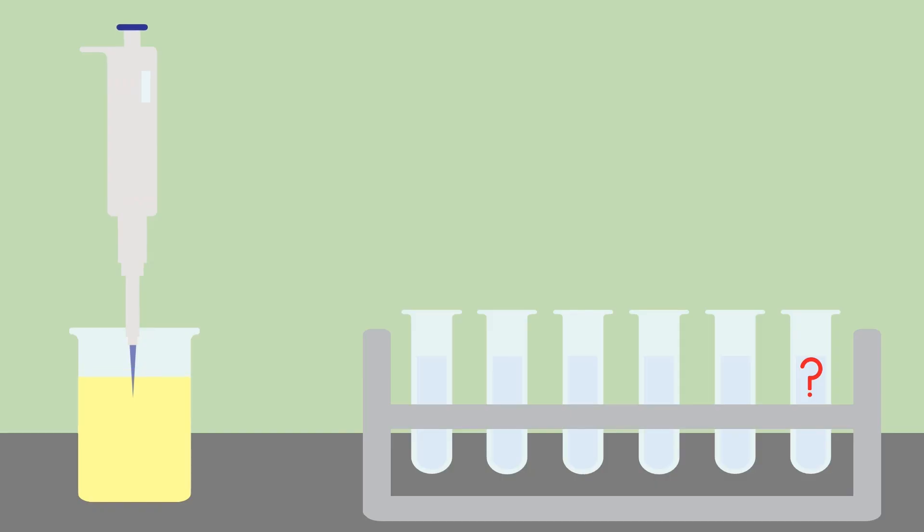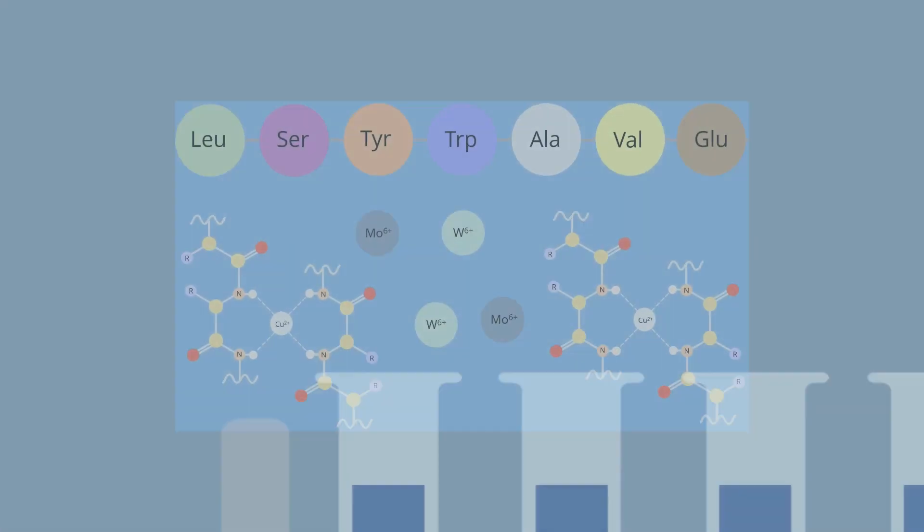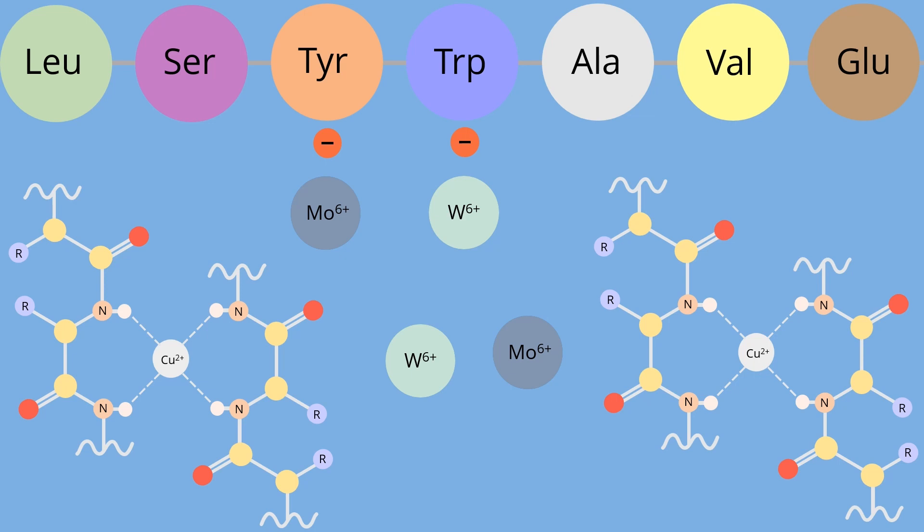This is followed by the addition and mixing of the folin phenol reagent, which causes the solutions to turn blue. The color change is due to the folin phenol reagent undergoing reduction, as its molybdenum and tungsten ions receive electrons from the tyrosine and tryptophan residues, as well as from copper complexes.